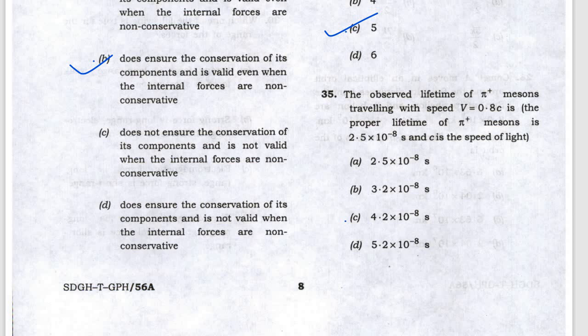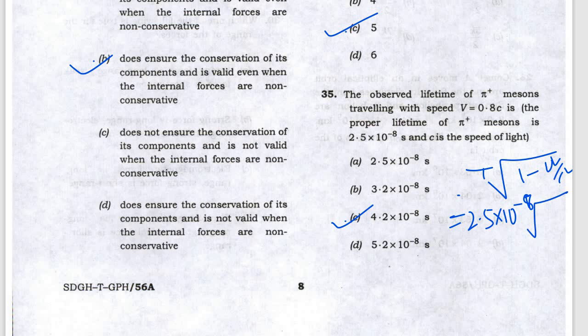Next, they are asking about relativity — this is a time dilation problem. The formula is T = T₀ / √(1 − v²/c²). Putting in the values, T₀ is given as 2.5 × 10⁻⁸, and you get 4.2.